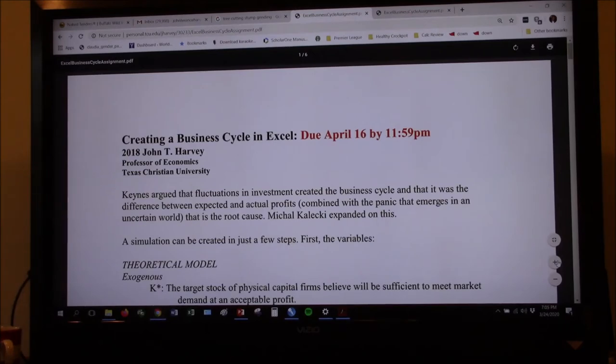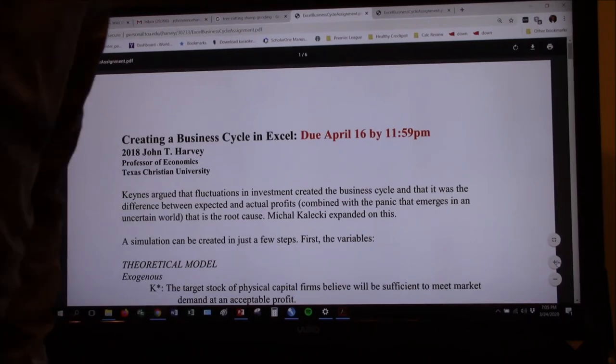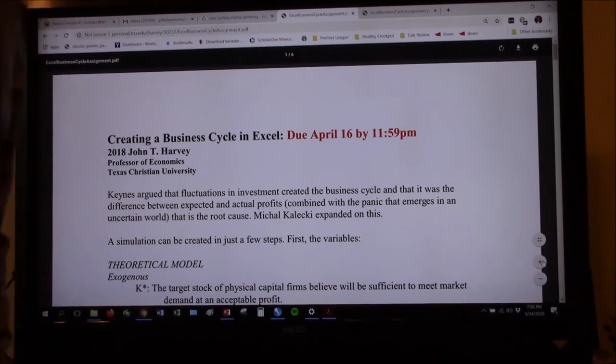Okay. Keynes argued that fluctuations in investment created the business cycle, as you know from Exam 2. And that it was the difference between expected and actual profits combined with the panic that emerges in an uncertain world. That is the root cause. Michael Kalecki expanded on this. Now, we didn't talk about how Michael Kalecki expanded on this, but he did. Kalecki wrote a bunch of stuff on the business cycle. And I got to tell you, a lot of this is pulled from Kalecki.